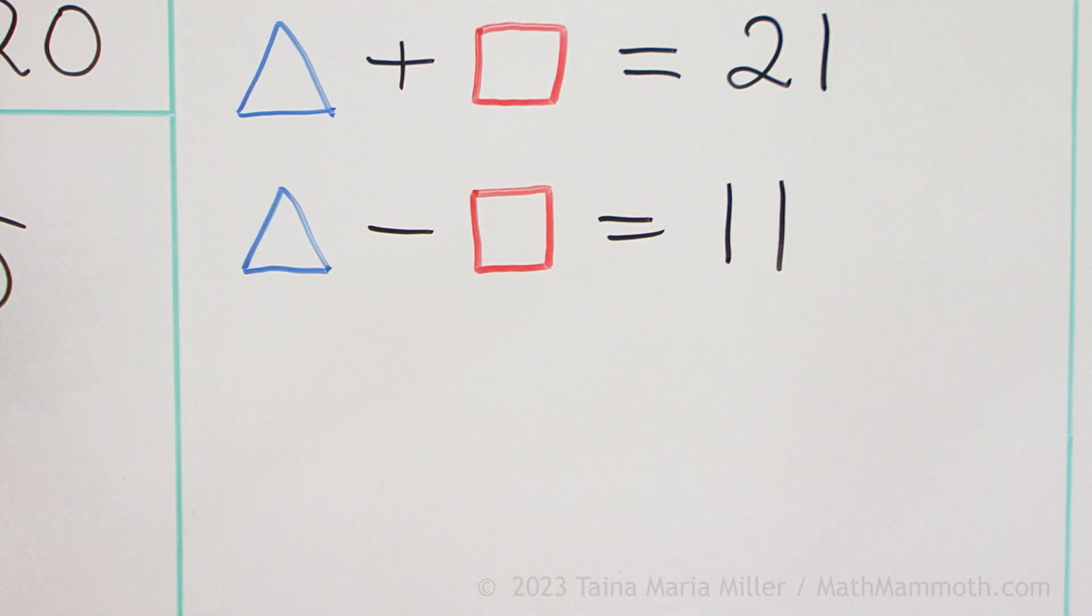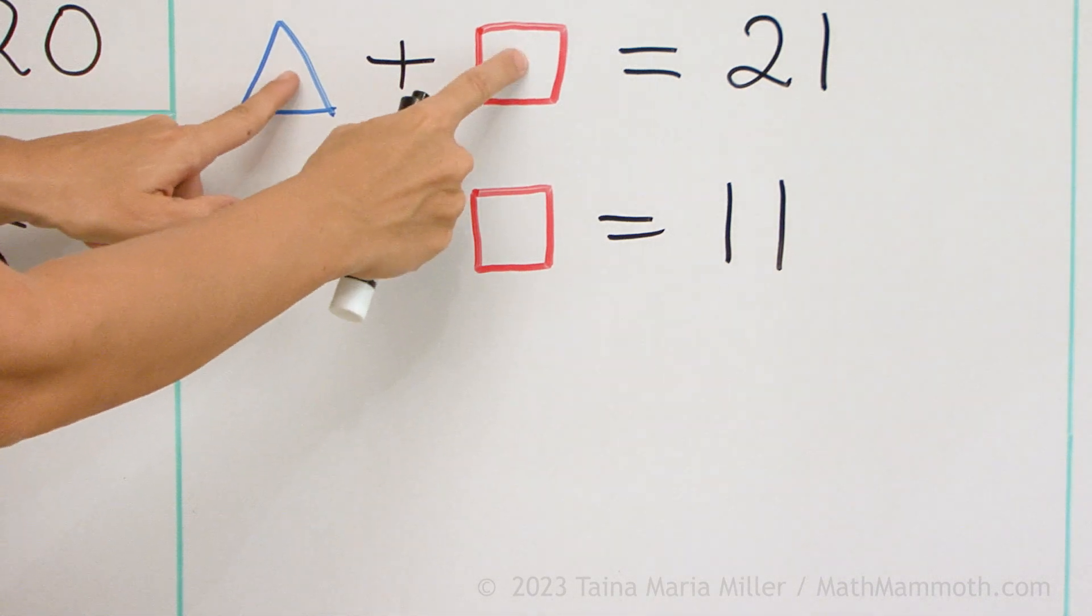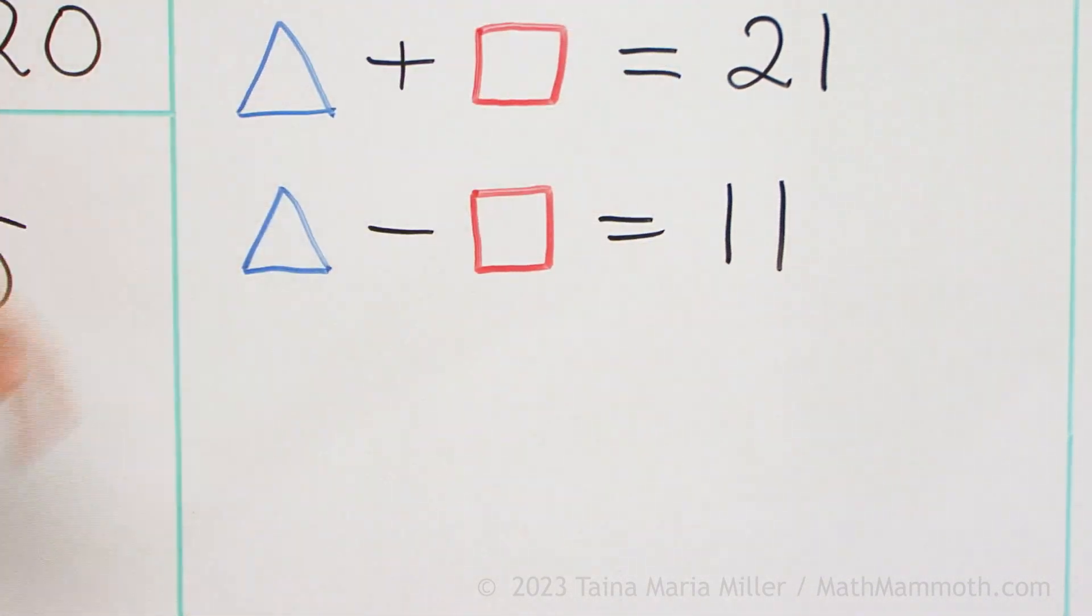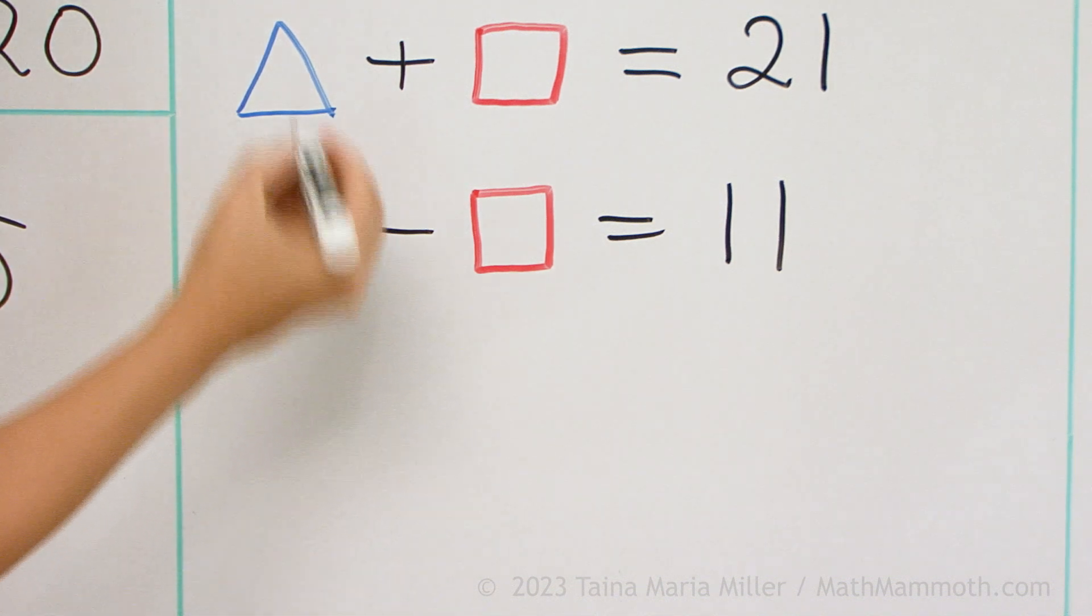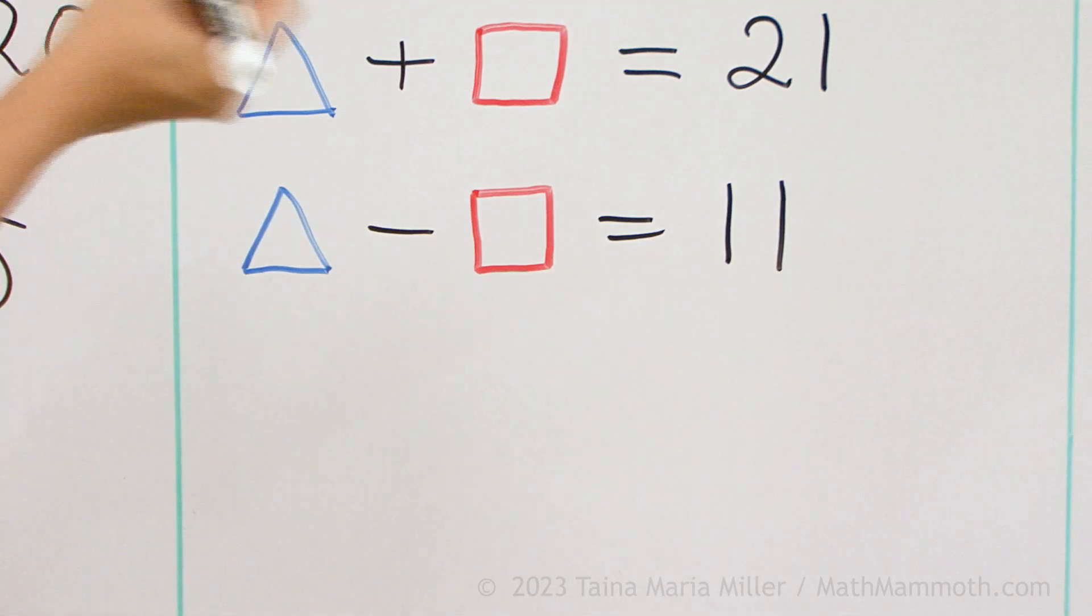Guess. Grab two numbers so that the sum is 21. Such as, what comes first to mind? Maybe 11 and 10. So maybe you try 11 and 10, those make 21, that's good.